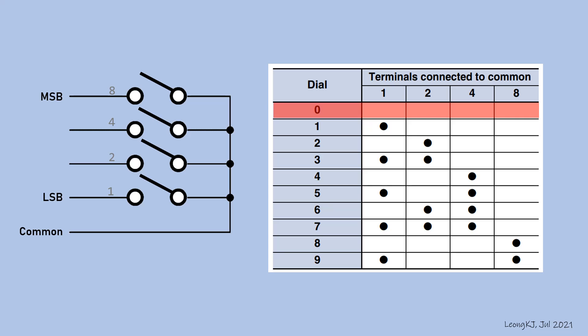When the dial number is set to 0, all internal switches are open. If the dial number is set to 1, this indicates that the corresponding switch is closed. When the dial number is 7, 3 internal switches are closed.